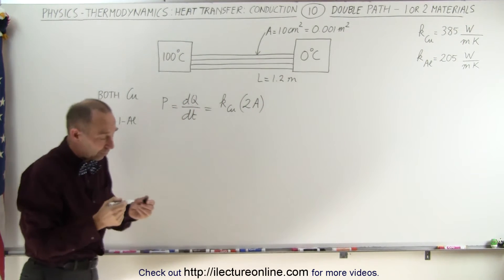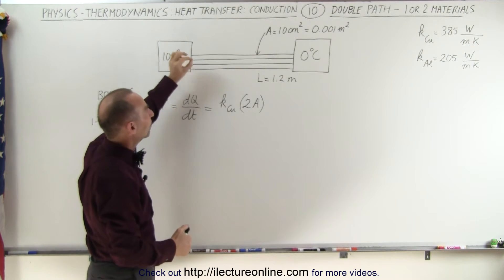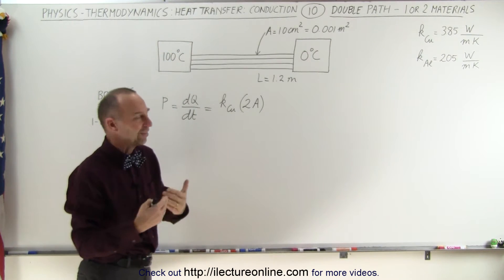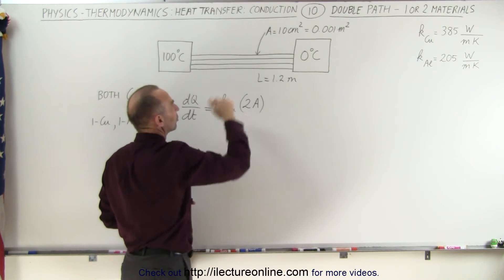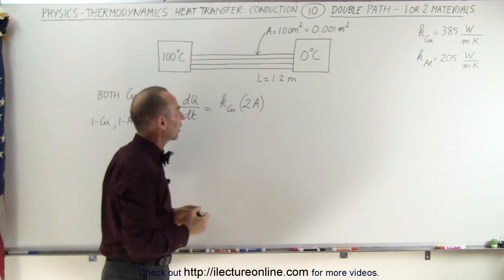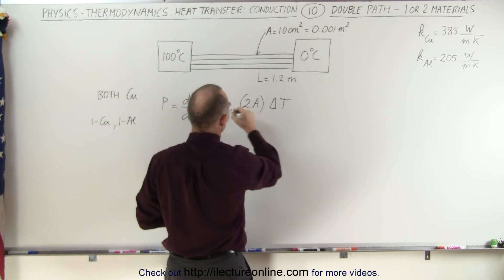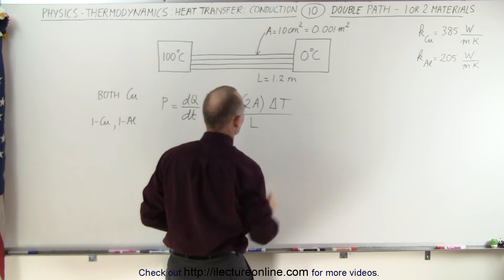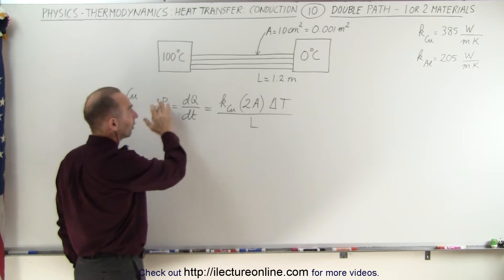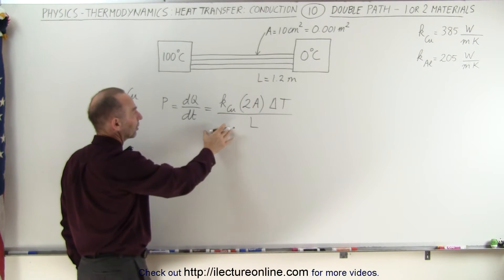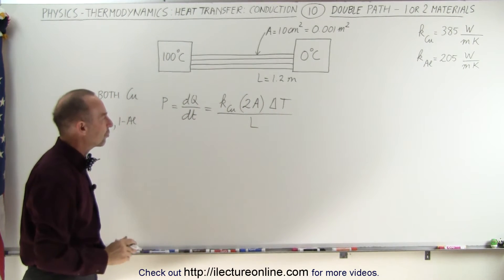In essence, we could replace a double path by a single path that has twice the cross-sectional area, so it has the exact same effect. All we did here is simply add an additional conducting path — additional cross-sectional area — and then multiply by the difference in temperature, which is the same, and divide by the length, which is also the same. Since they're made out of the same material, same length, same cross-sectional area, we simply just have to double the area through which the heat can travel.